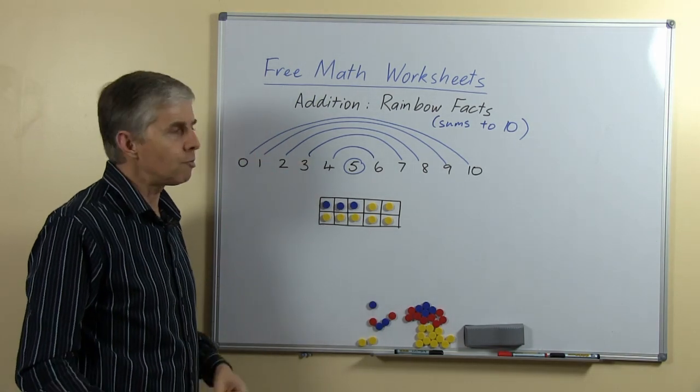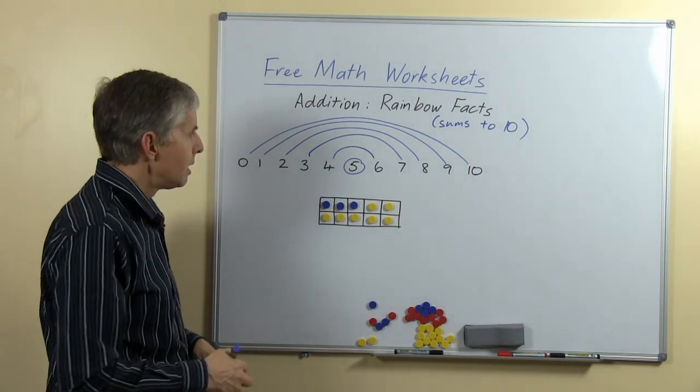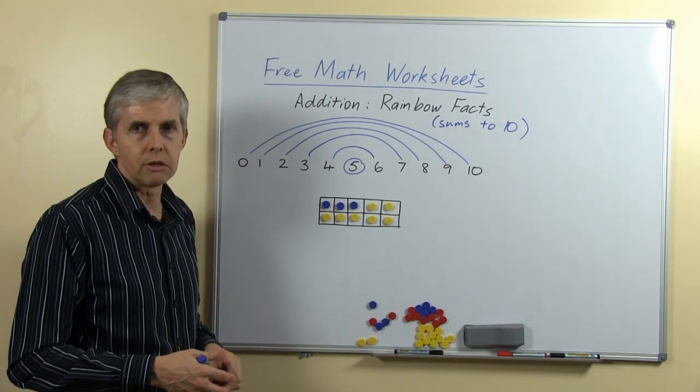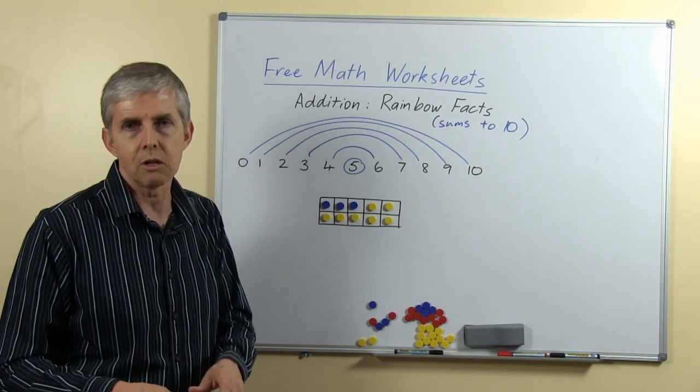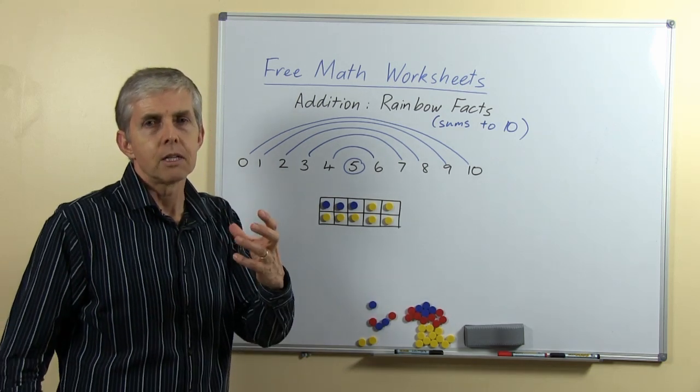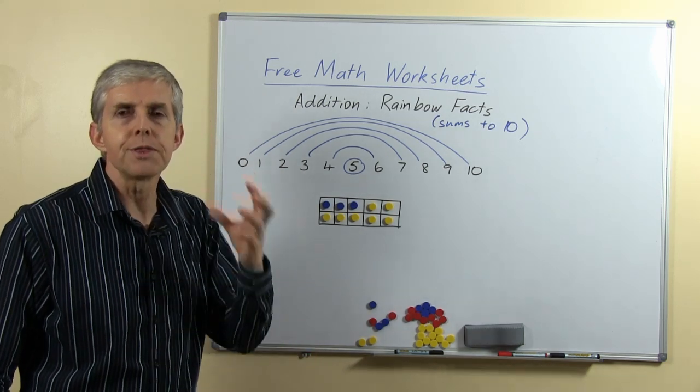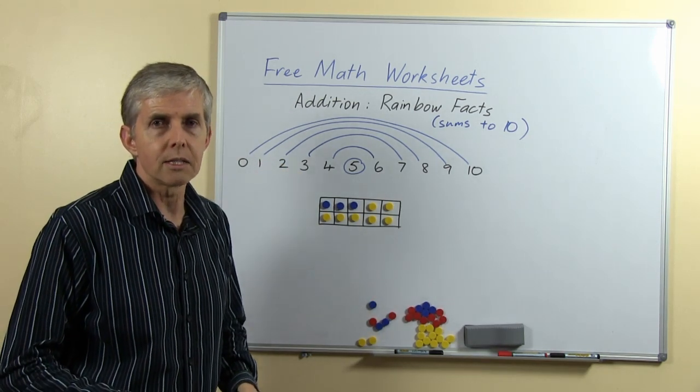That's the idea behind the rainbow and this is something you could display in the classroom to help students learn the facts. Now I should point out, a bit like the doubles facts I looked at recently, the rainbow facts don't actually have a cognitive strategy. There isn't a way of thinking about these and go okay if I do this and manipulate that I'll work out the rainbow fact.